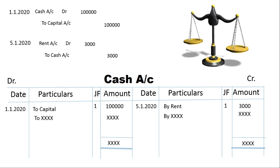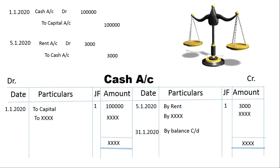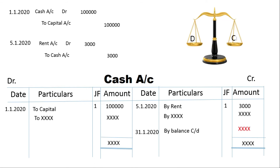We need to balance this. We need to balance the amount on each side. We need to balance the debit side and credit side of the ledger. The balance amount goes on the credit side.